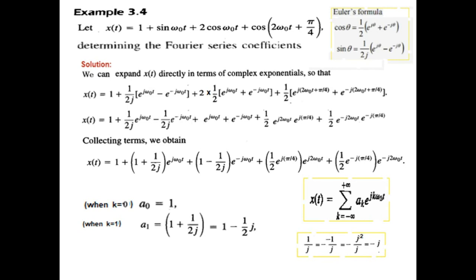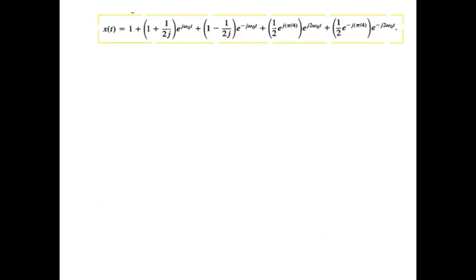So we take j terms up. So it becomes 1 minus 1 over 2j. 1 over j becomes minus j. And similarly, a minus 1 term, j take up.